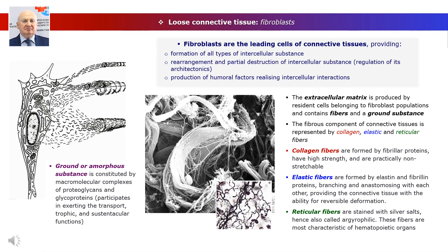Fibroblasts are the leading cells of connective tissues. They ensure the formation of all types of intercellular substance, as well as restructuring and partial destruction of the intercellular substance, thereby regulating its architecture. In addition, fibroblasts produce humoral factors that implement intercellular interactions both in connective tissue and with cellular elements of other tissues. As a result, fibroblasts can regulate inflammatory processes, participate in wound healing, and tissue regeneration.